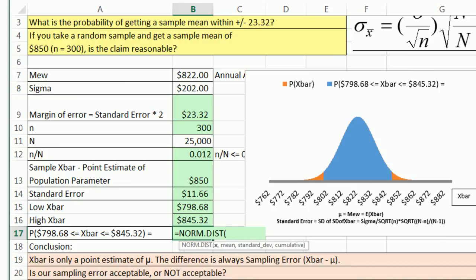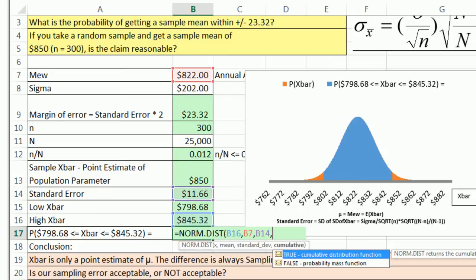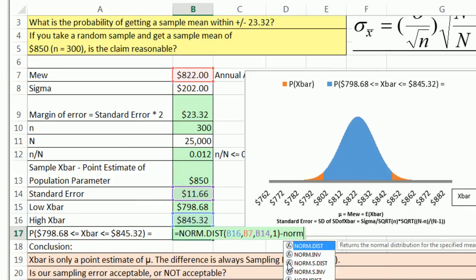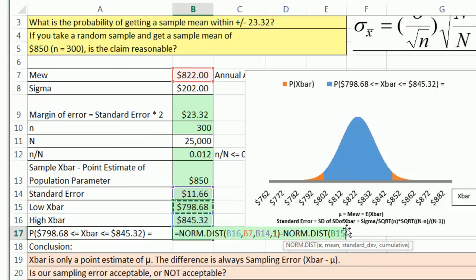We do norm.dist. It says x, but we're talking x-bar here. We're perfectly allowed to put x-bar in there. The bigger, comma, our mean, comma, not standard deviation of the population. It's our standard error, comma, 1 for cumulative. That will go from the low end all the way up to this bigger x-bar minus norm.dist. It says x, but we know these are x-bars. That's the lower. The second one that gets subtracted is always the probability of the lower, comma, mean, population or expected x-bar standard deviation. That is the standard error, comma, 1, close parentheses, Control Enter.